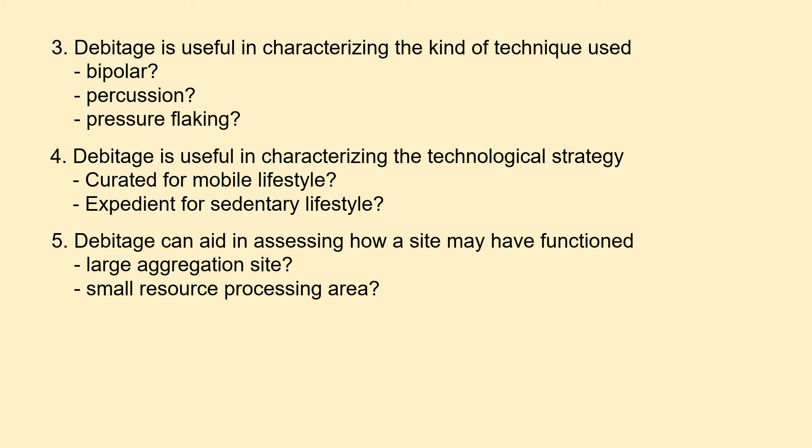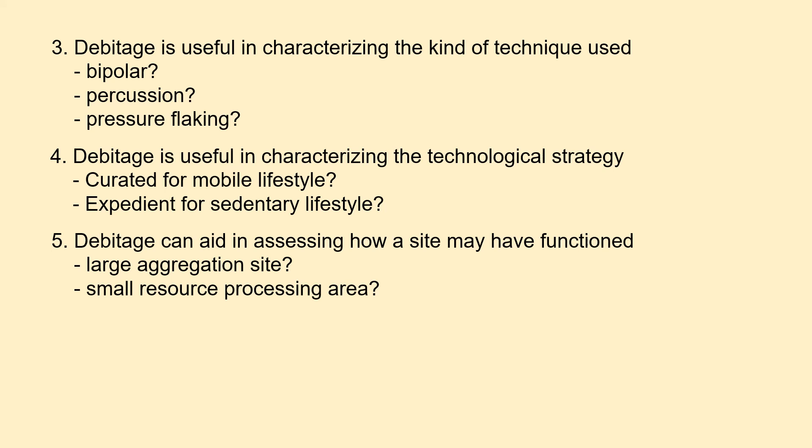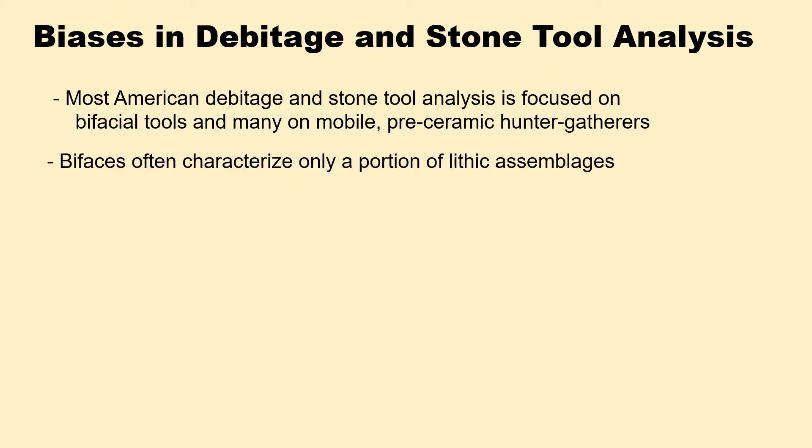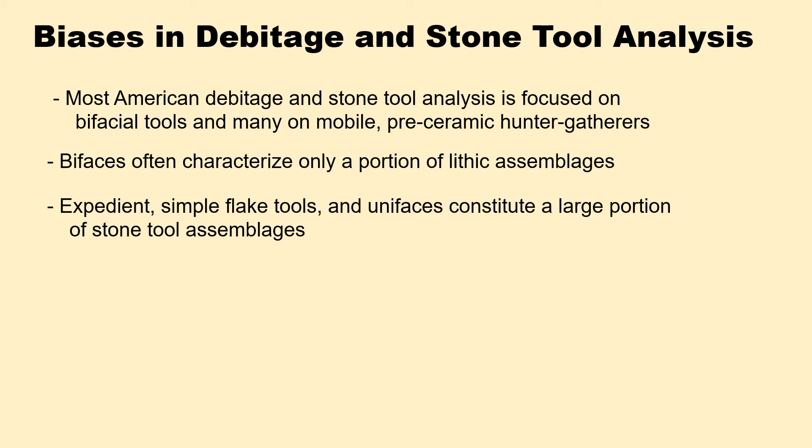Debitage can also aid in assessing how a site may have functioned. However, biases exist in Debitage and Stone Tool Analysis. Most American Debitage and Stone Tool Analysis focuses on bifacial tools, and many analyses focus on mobile, pre-ceramic hunter-gatherers. Bifaces characterize only a portion of a lithic assemblage — expedient simple flake tools and unifaces constitute a large portion of stone tool assemblages.